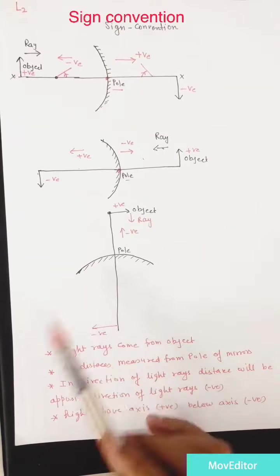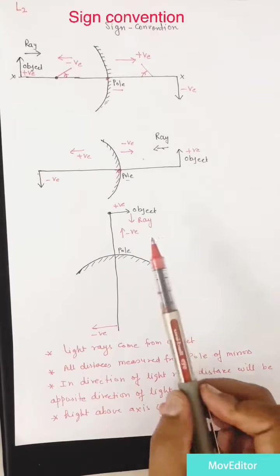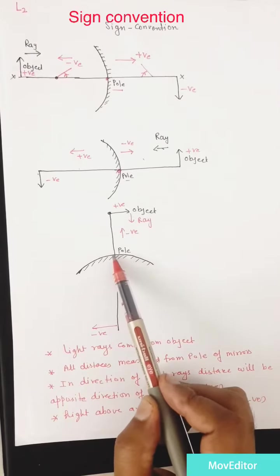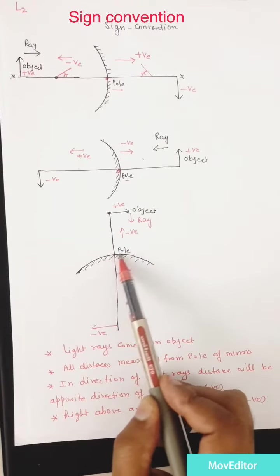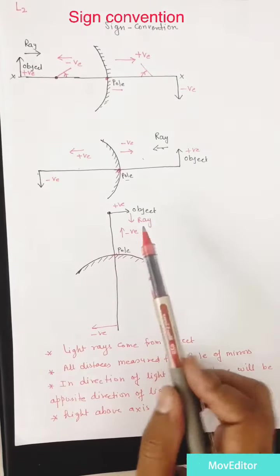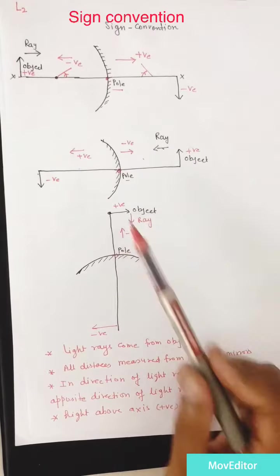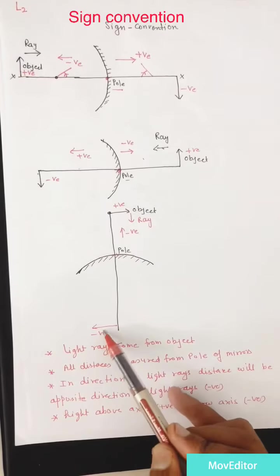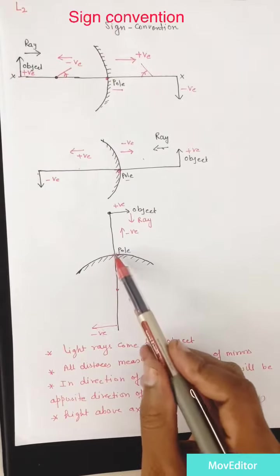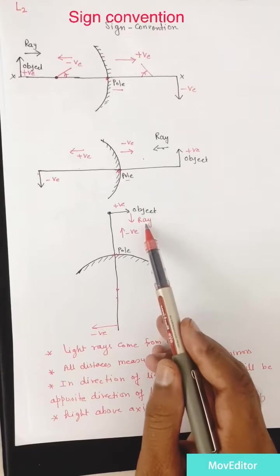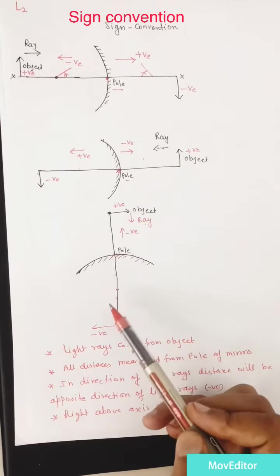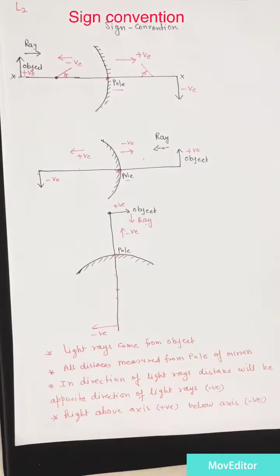Now looking at a convex lens: the object is placed such that the light ray comes from the object. While measuring object distance, you move opposite to the direction of the light ray, so object distance is negative. If you measure image distance moving in the same direction as the light ray, that distance is positive. Similarly, the center and the focus, measured in the same direction as the light ray, are also positive.